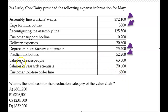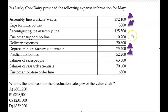Salaries of salespeople, salaries of research scientists, customer toll-free order line — this is marketing, this is also marketing or sales, and research scientists would be design. So those four things would be the four that would be part of it.